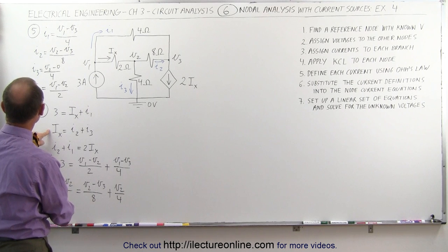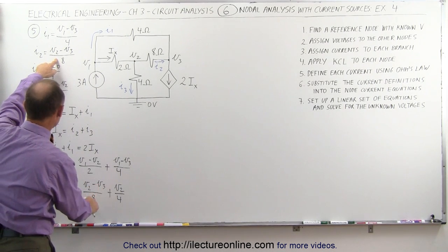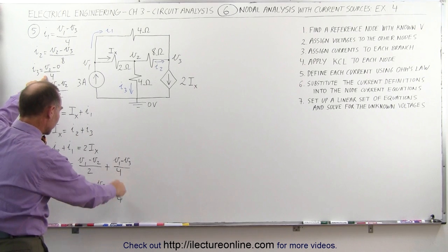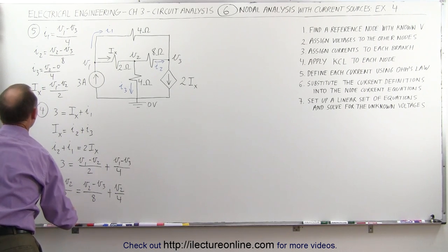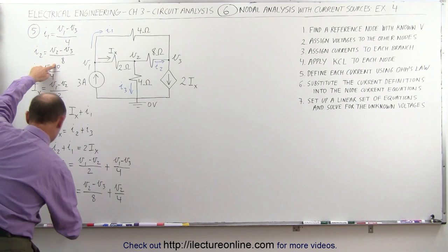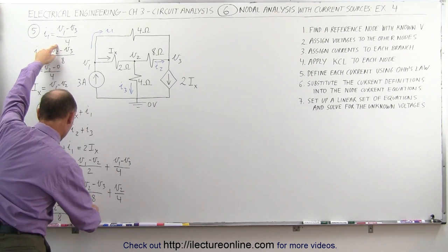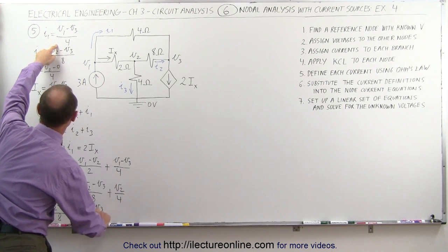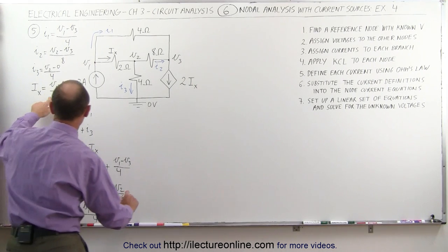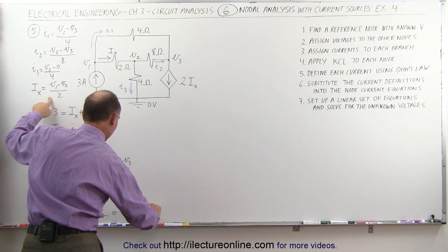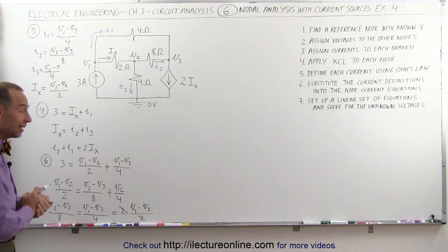The second equation: I sub x, which is V1 minus V2 divided by 2, equals I sub 2 — V2 minus V3 divided by 8 — plus I sub 3, which is V2 divided by 4. The third equation: I sub 2, which is V2 minus V3 divided by 8, plus I sub 1, which is V1 minus V3 divided by 4, equals 2 I sub x, which is V1 minus V2 divided by 2 — the 2's cancel. We now have three equations.